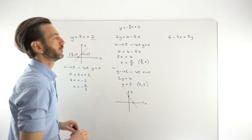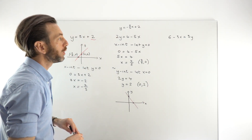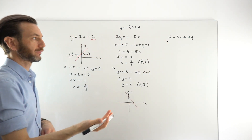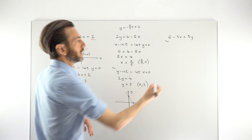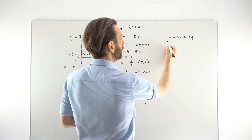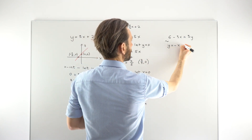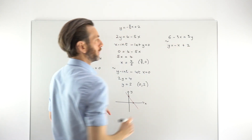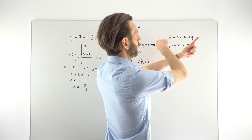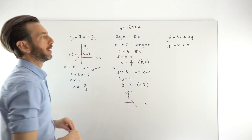The third example is also jumbled up, not in the correct format. This time let's start by rearranging it into the correct format. Dividing both sides by 3 and reordering the terms to get y on the left, we end up with y equals minus x plus 2.